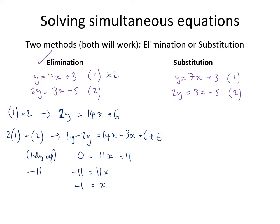With x = −1, we substitute back into equation 1: y = 7 × (−1) + 3 = −7 + 3 = −4. We can check using equation 2: 2 × (−4) = −8 and 3 × (−1) − 5 = −3 − 5 = −8. That works, so the elimination method gives x = −1, y = −4.